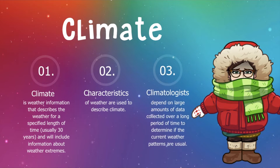Climatologists depend on large amounts of data collected over a long period of time to determine if the current weather patterns are usual or not. We know that climate happens over at least 30 years, so you're going to have a lot of data with the weather that occurred each and every day. With that large amount of data, climatologists can determine if the current weather patterns are usual or not.